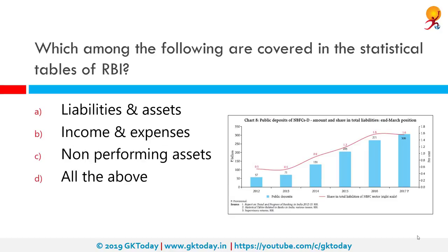Which among the following are covered in the statistical tables of the RBI? The correct answer is all of the above. Liabilities and assets, income and expenses, and non-performing assets are all covered. For scheduled commercial banks, entity-wise information on major items includes liabilities, assets, income, expenses, selected financial ratios, number of employees, and details of priority sector advances. In addition, capital adequacy ratio, non-performing assets, exposure to sensitive sectors, contingent liabilities, and unclaimed deposits are also included.